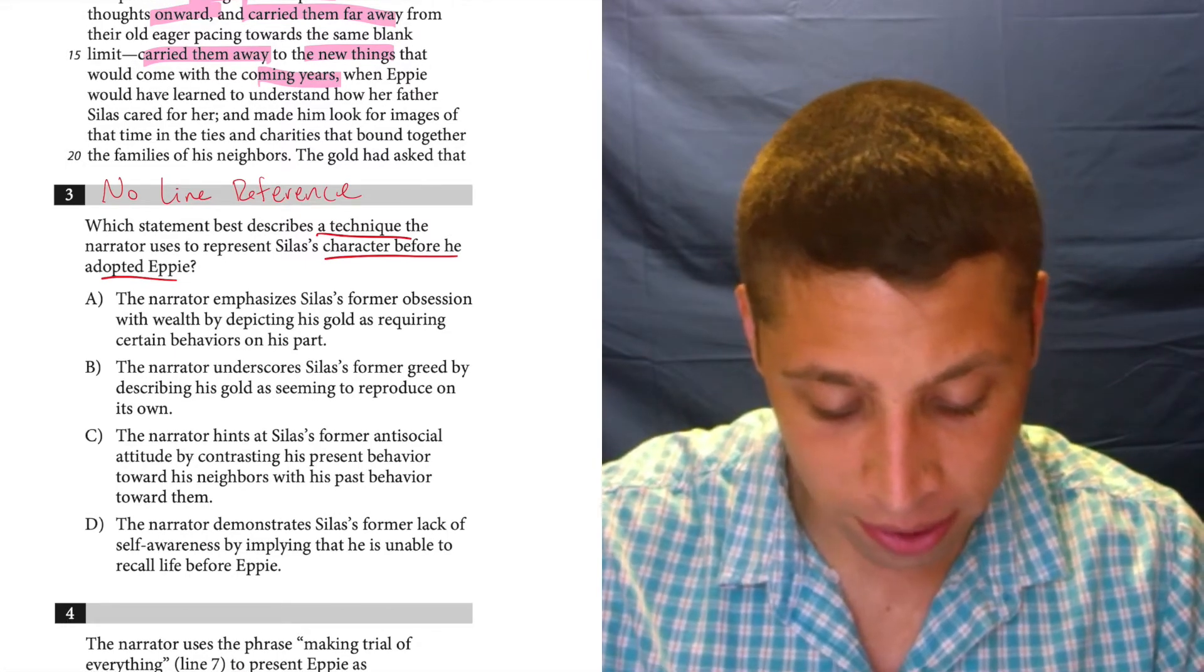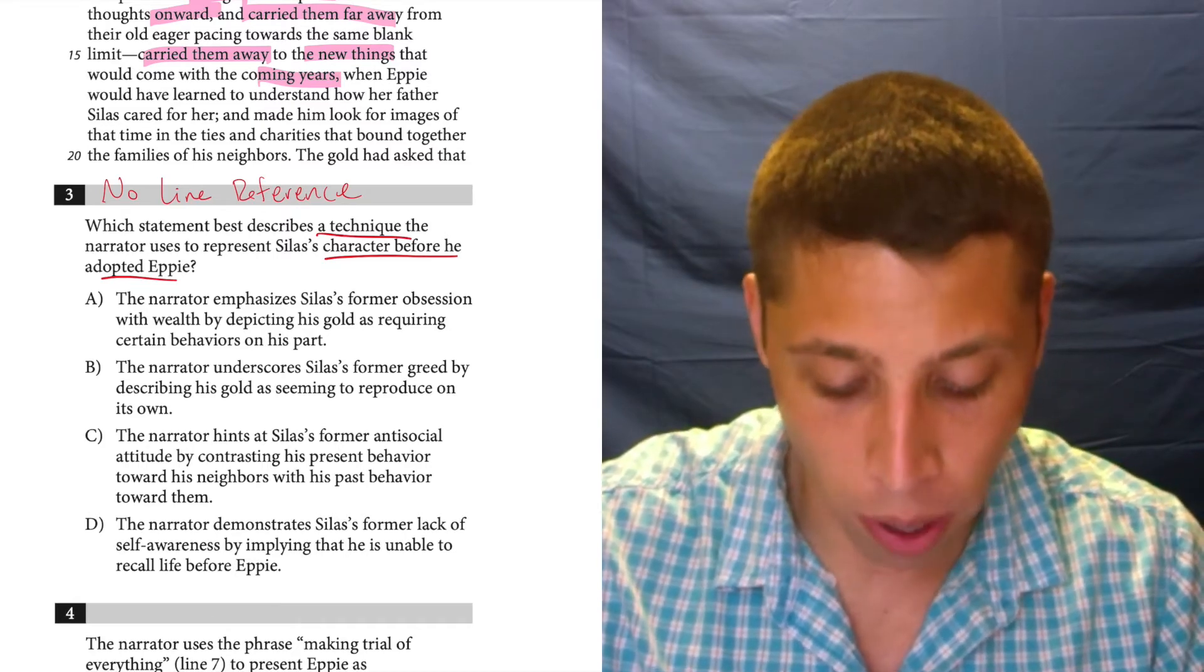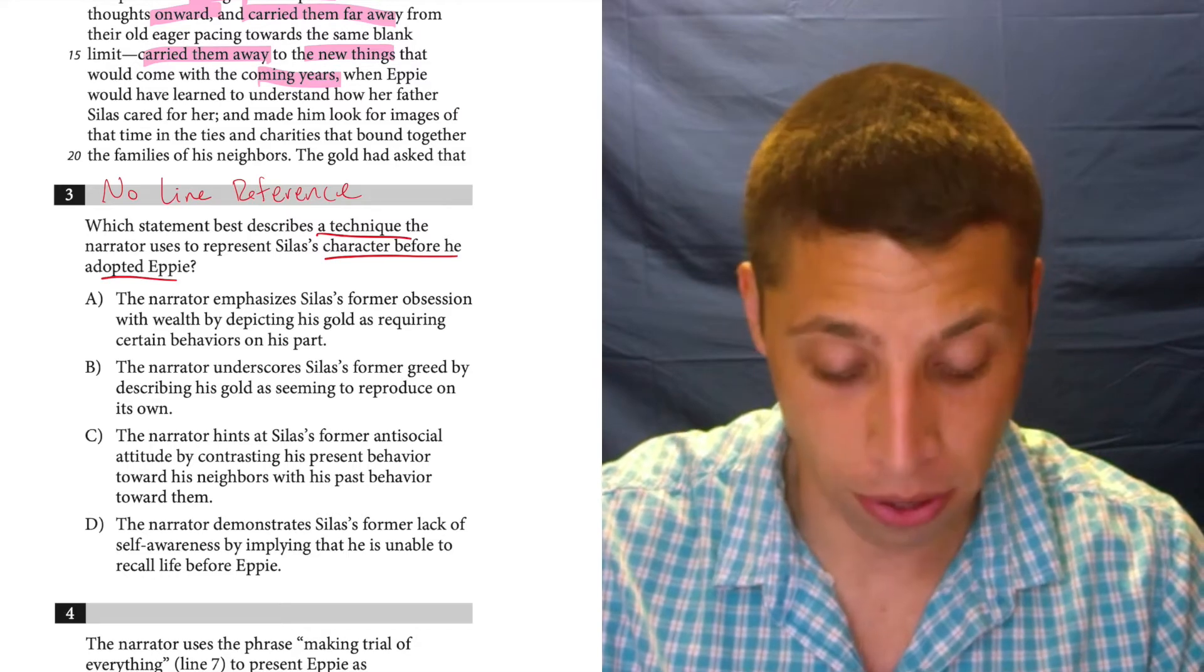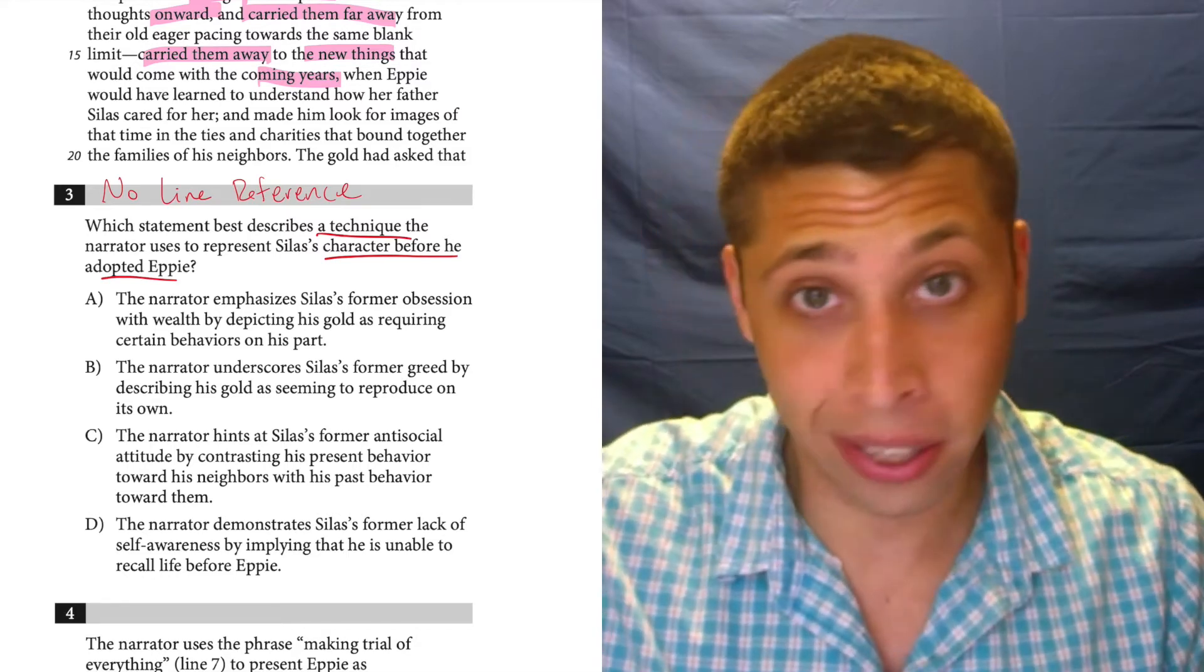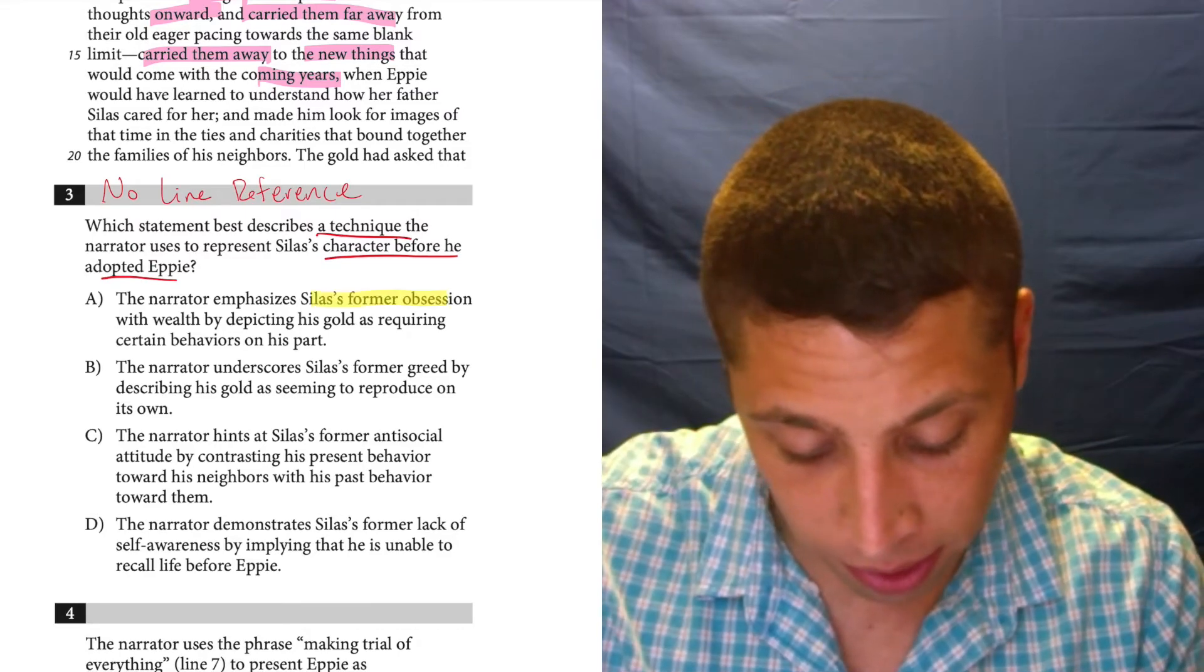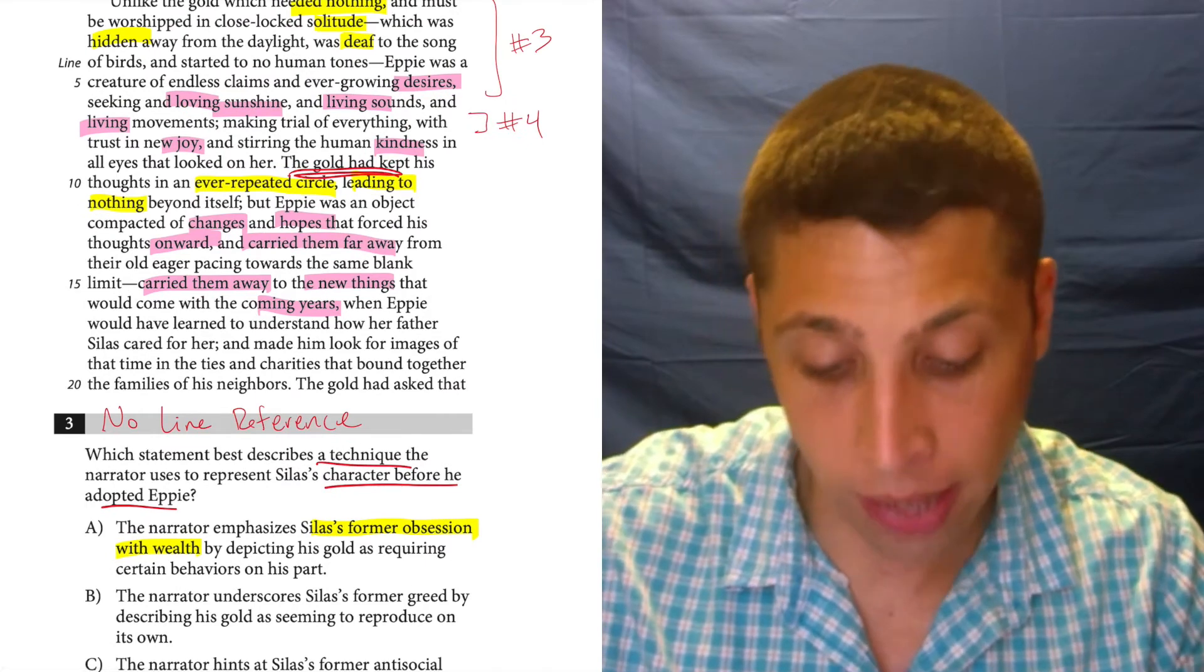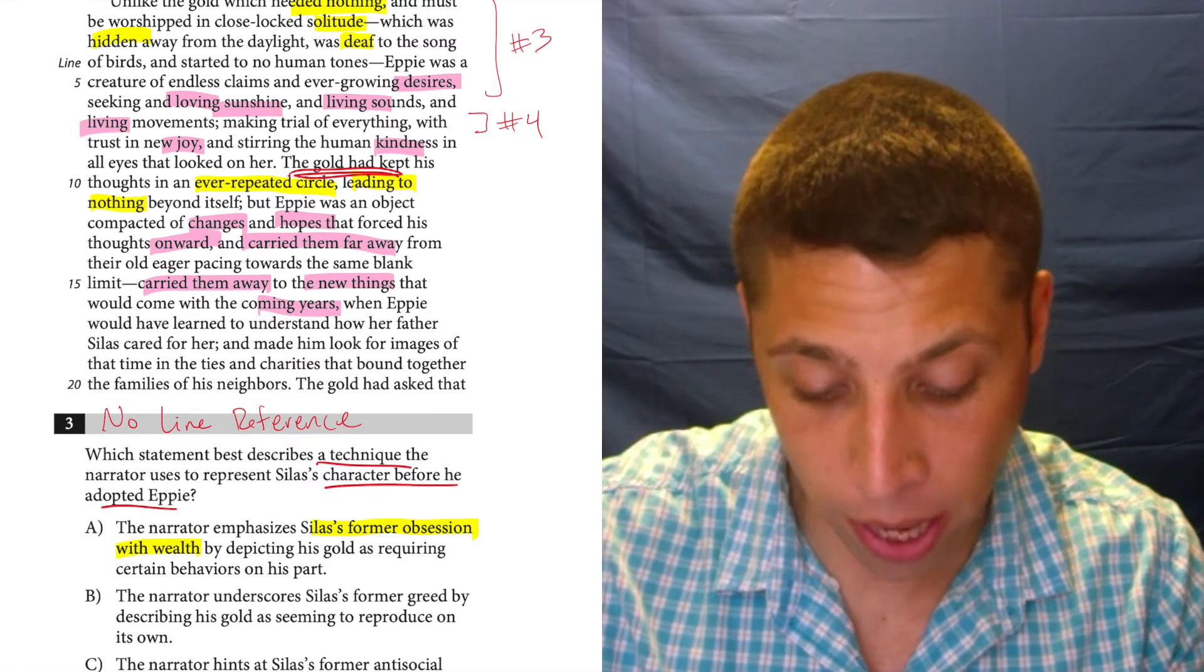Let's look at the choices now. The narrator emphasizes Silas's former obsession with wealth by depicting his gold as requiring certain behaviors on his part. So I don't love that choice. There are some things I like about it, I guess. The narrator emphasizes Silas's former obsession with wealth.